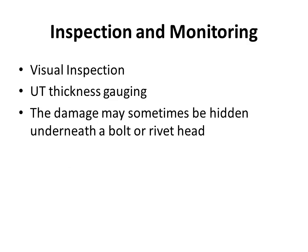Inspection and monitoring: visual inspection and ultrasonic thickness gauging are very effective methods for detecting galvanic corrosion. The damage may sometimes be hidden underneath a bolt or rivet head.